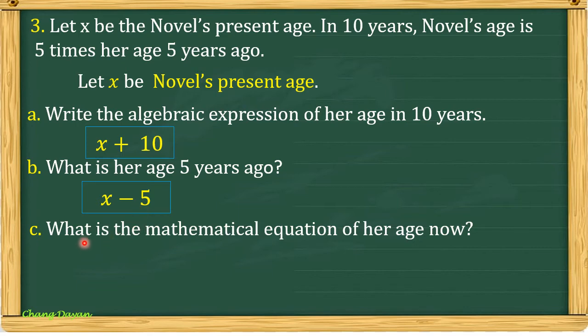For letter C, what is the mathematical equation of her age now? So as we all know, based on the event, in 10 years, novel's age is 5 times her age 5 years ago. So we have here 5 multiplied by her age 5 years ago. So we have x minus 5. Again, in 10 years, so we have x plus 10 equals 5 times her age 5 years ago. So we have x minus 5.